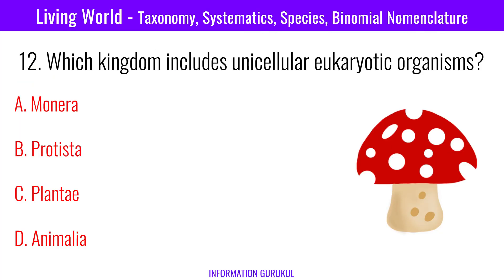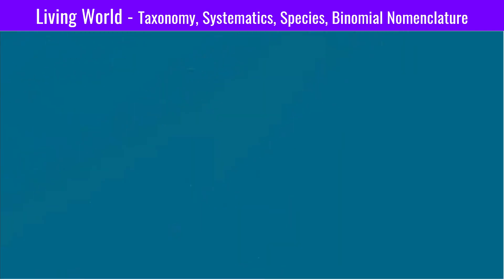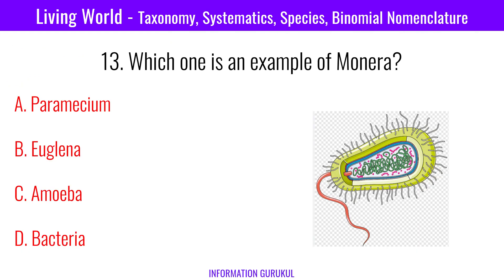Which kingdom includes unicellular eukaryotic organisms? Protista. Which one is an example of Monera? Bacteria.